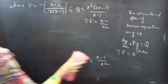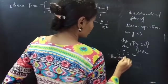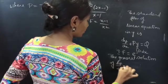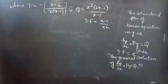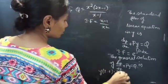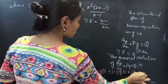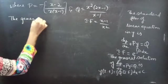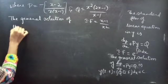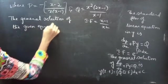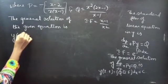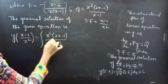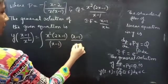Now we need to find the general solution to the given equation. The general solution of a linear equation in y is given by y times the integrating factor equals integral of Q times integrating factor dx. Using this formula, the general solution is y times (x minus 1)/x squared equals integral of x squared times (2x minus 1)/(x minus 1) times (x minus 1)/x squared dx.